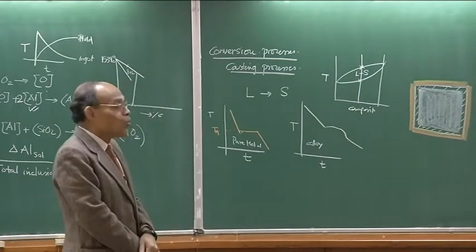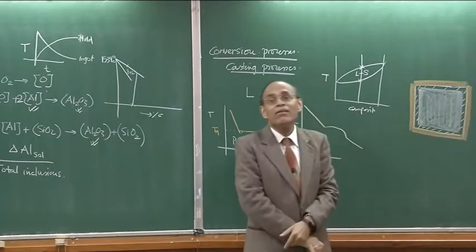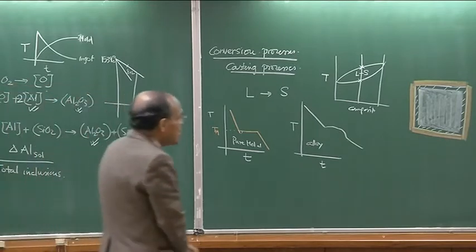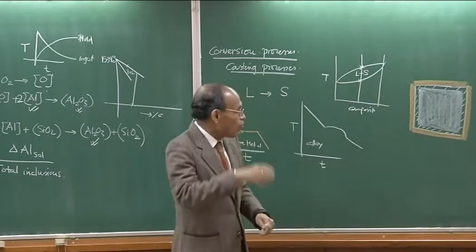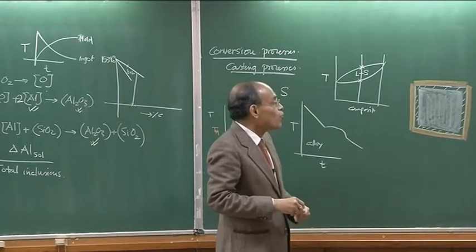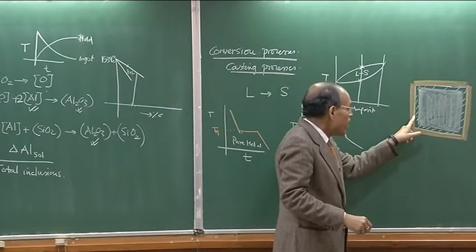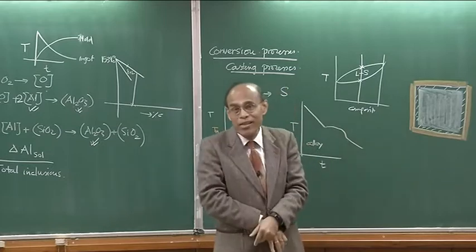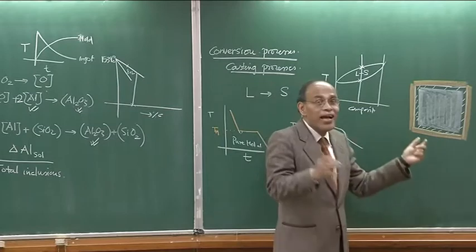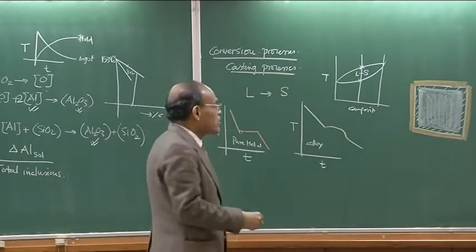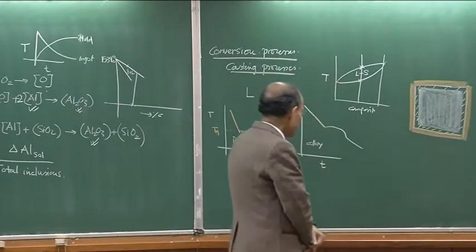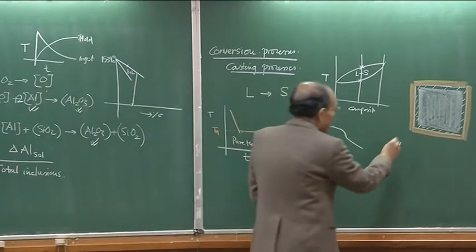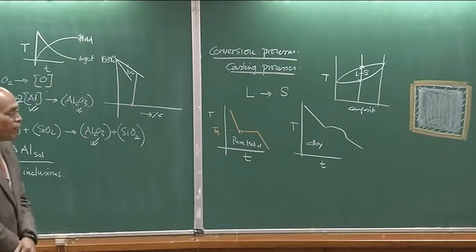The gap between the solidifying ingot and mold contains air, which is a very poor conductor and provides large resistance to solidification. In industrial casting, this gap is filled with a mold powder — a low-melting oxide powder that creeps into the gap, displaces the non-conducting air, and significantly increases the rate of heat conduction between the ingot and mold. Mold powder is therefore almost always used in casting processes to expedite solidification.